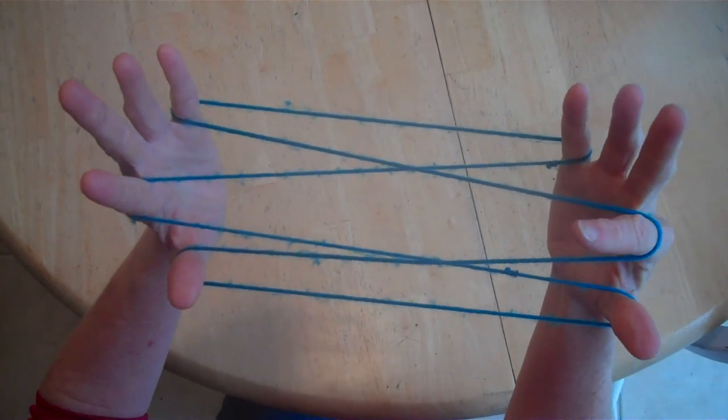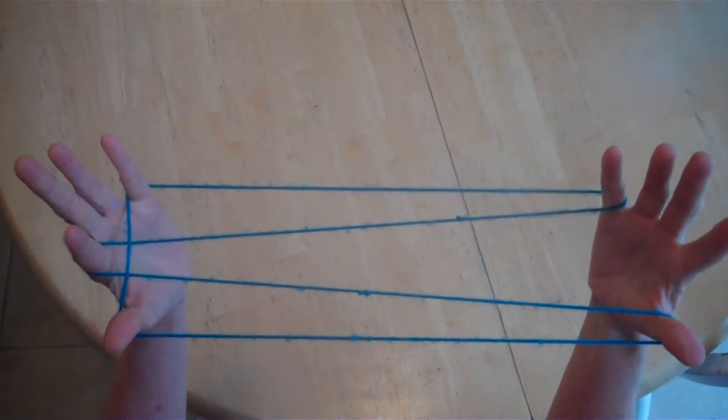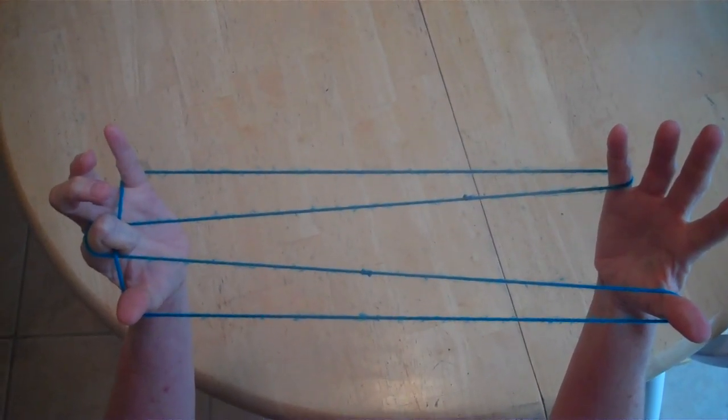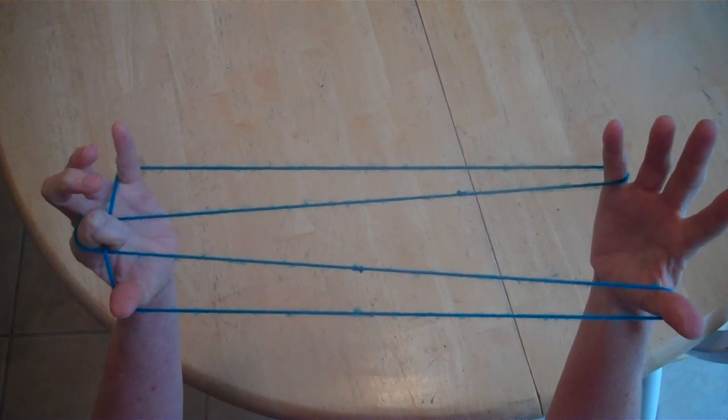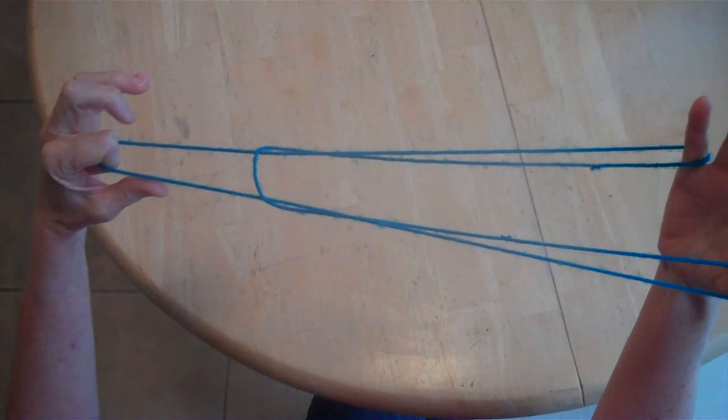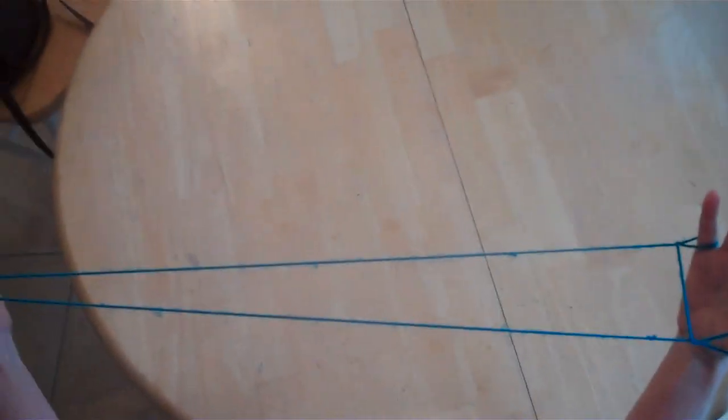Next you're going to drop your right pointer. Then you're going to take your left pointer. You're going to reach down and grab that string in front of it. We're going to drop the pinky and the thumb and let it slide off that pointer. There we have this.